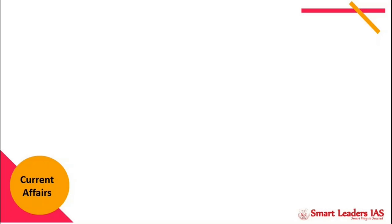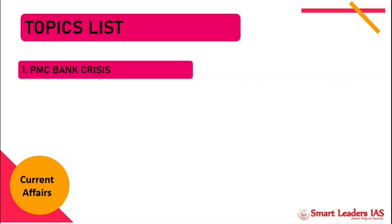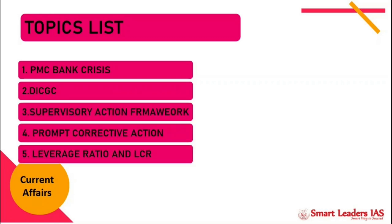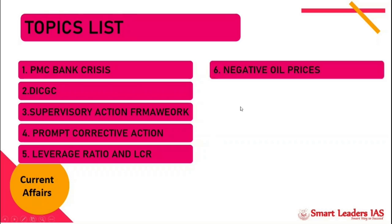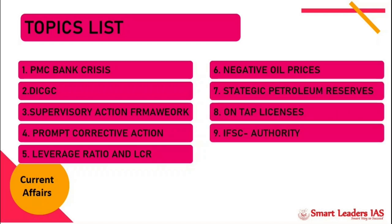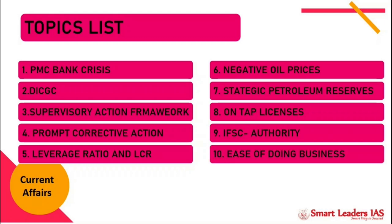Hello, hi everybody. Welcome to a new session on free current affairs crash course. Today we are going to be discussing a few topics related to economic current affairs. The 10 topics we are going to see today are: the PMC bank crisis, the DICGC, Supervised Action Framework, Prompt Corrective Action — all related to the PMC bank crisis — the leverage ratio, oil prices, petroleum reserves, on-tap licensing, the authority for IFSC, and finally the ease of doing business.